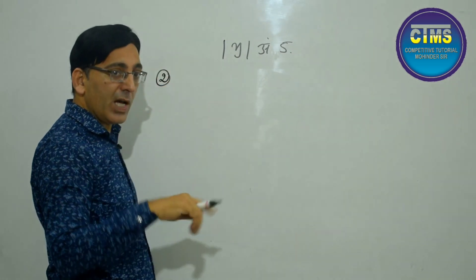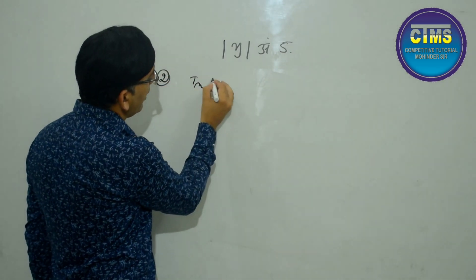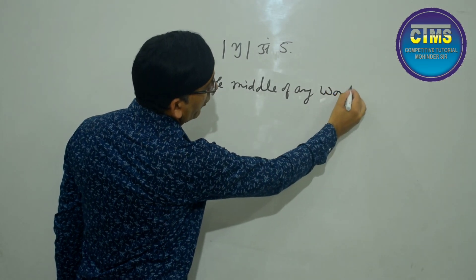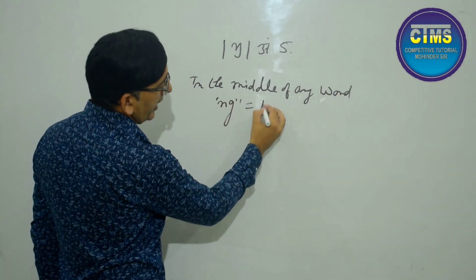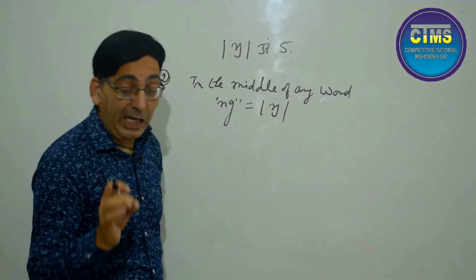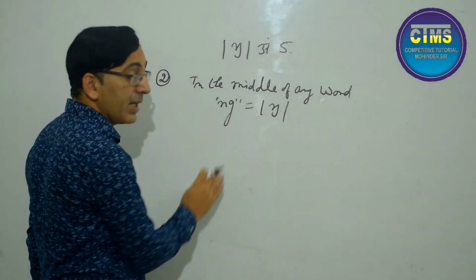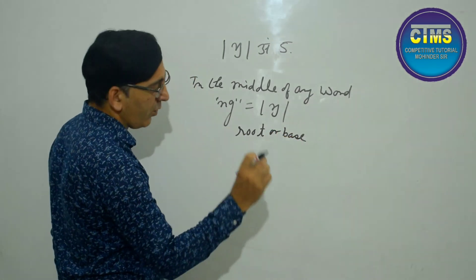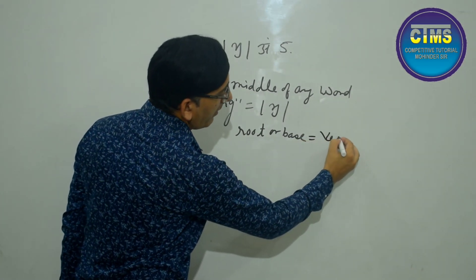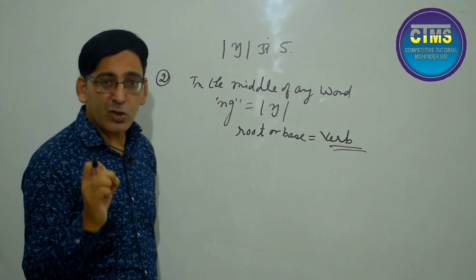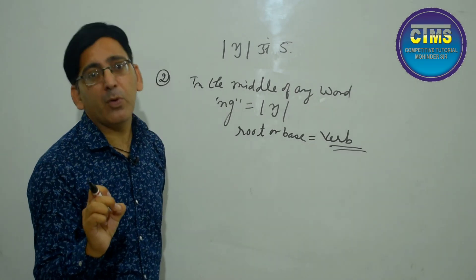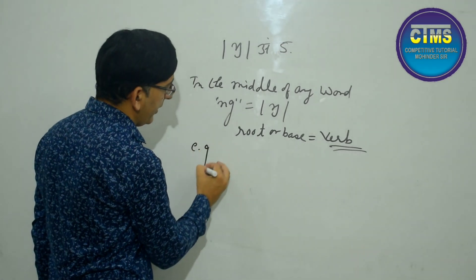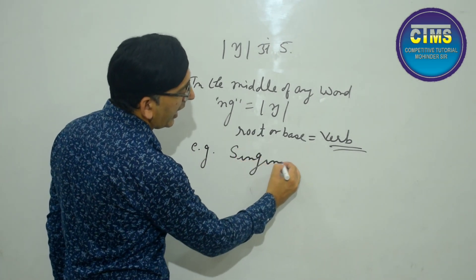Rule number two: N-G can appear in the middle of any word. When does it appear in the middle? When our root — our base, our main word — is a verb. If the main word is a verb and N-G appears in the middle, it still gives the ŋ sound. For example: S-I-N-G + I-N-G.